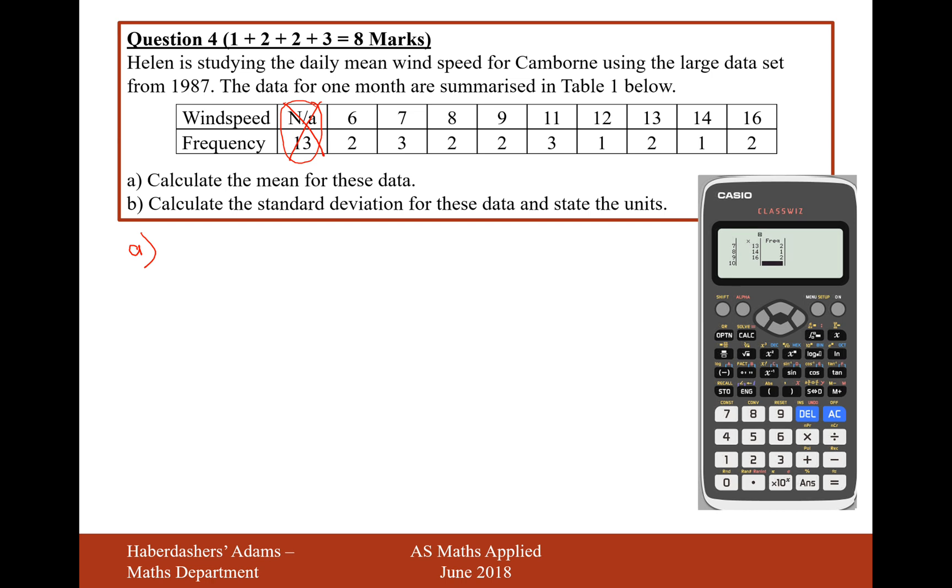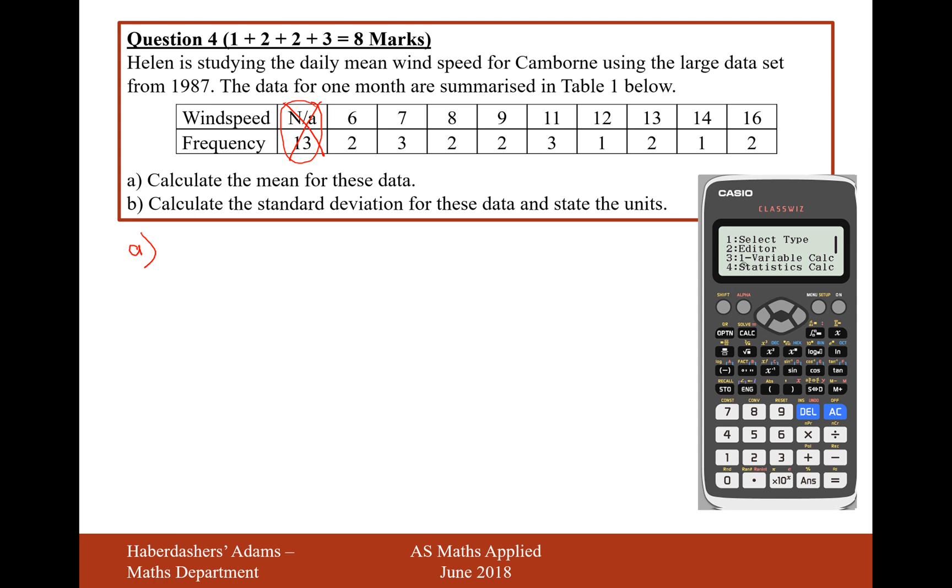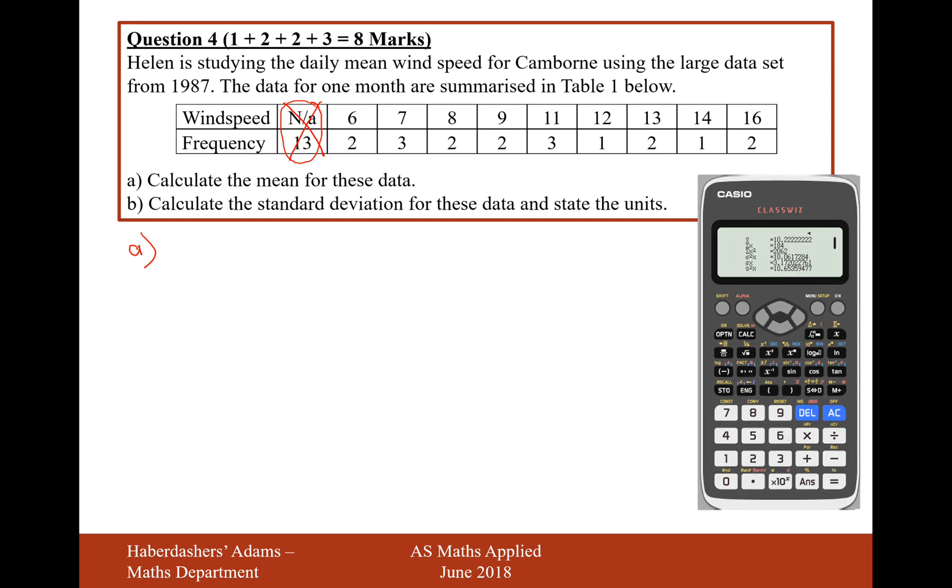And then we'll press option, and then once we're at option, we'll select option number 3, which is one variable calculations. And when we've selected the one variable calculations, we get the mean on the top, which says that x bar equals 10.22 recurring.